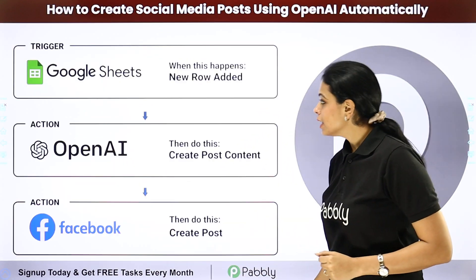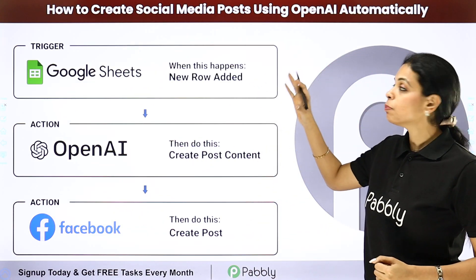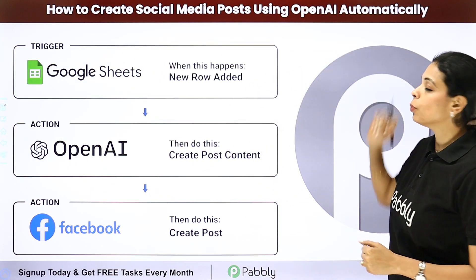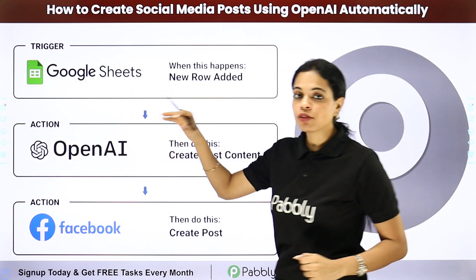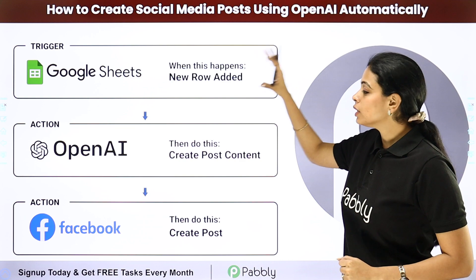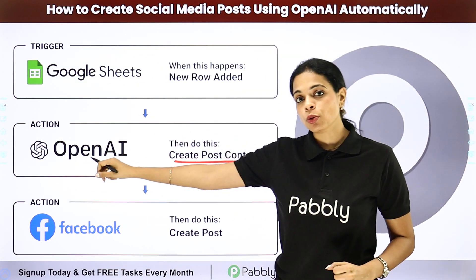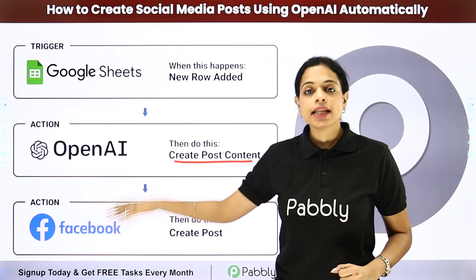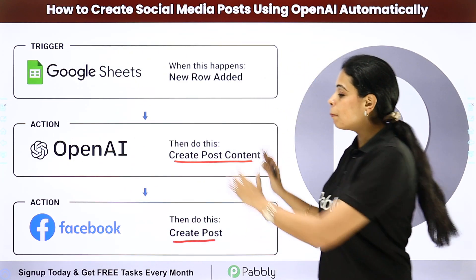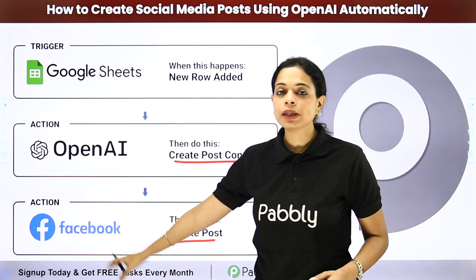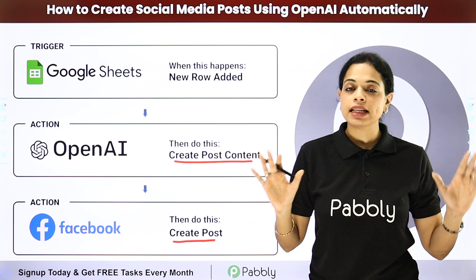Let me show you. Let's take an example where you have to create social media posts automatically using OpenAI. Let's say that in your Google Sheet you have certain titles. With that title you will be able to create post content using OpenAI, and then in Facebook you are supposed to create that post. The post is already there and you would be able to directly create it in your Facebook without any effort.